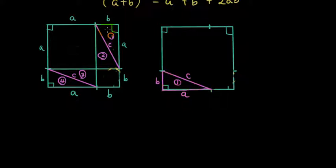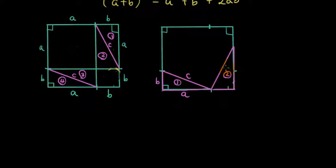I'm cutting it out and putting it here. Then I'm going to do the same with triangle number two — cutting and pasting it on the right hand side. This is triangle number two, where the longest side is C and the shorter sides are A and B. Then I'm going to cut triangle three and paste it on the square.